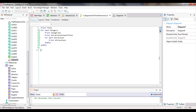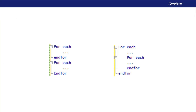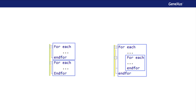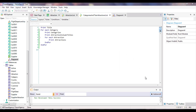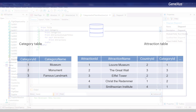How did GeneXus determine that filter without us having to write it? The answer is in the way forEach commands are written. If two forEach commands are written one after the other, they are independent of each other. On the other hand, if we type one forEach command inside another, it's because for each record of the first navigation we want to run through a set of records in the second one. When we write nested forEach commands, GeneXus determines, for every forEach command, the base table that will be navigated, and then looks for relationships between that information.